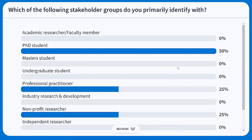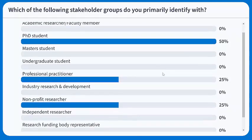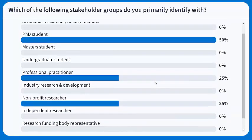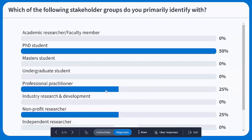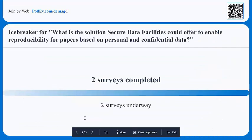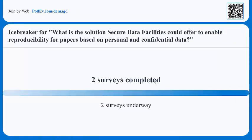The very first question is: which of the following stakeholder groups do you primarily identify with? We have PhD students, professional practitioners, not-for-profit researchers — we're just trying to find out more about what kind of research you are doing. At the end of the session, we also have a similar survey looking at solutions that are able to enhance reproducibility when it comes to secure data facilities, trying to see whether a solution is more fit for purpose for everyone, no matter their background, stakeholder group, or the domain they are working in.